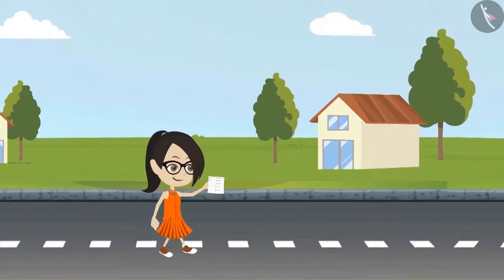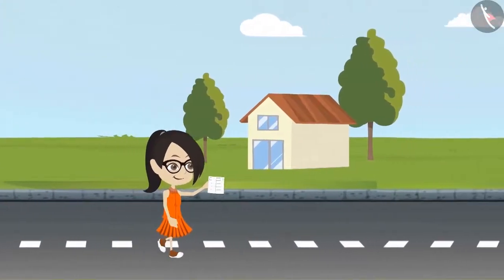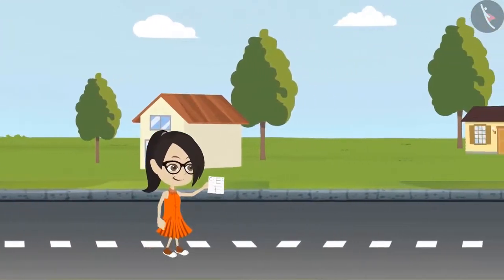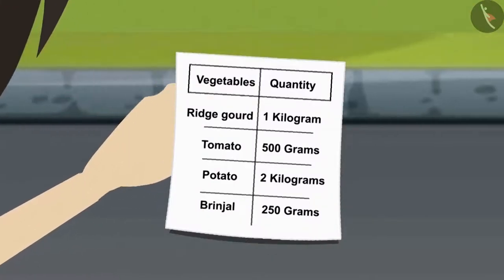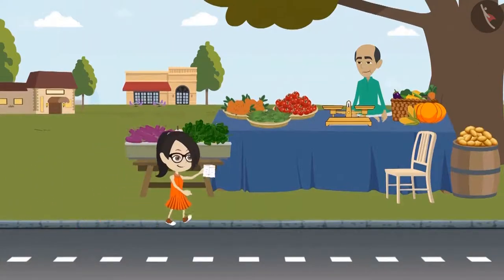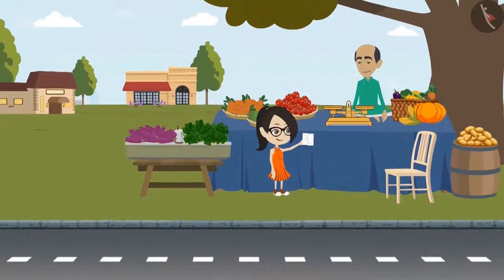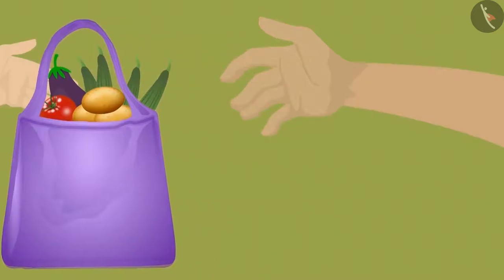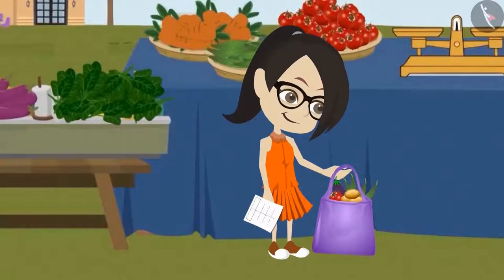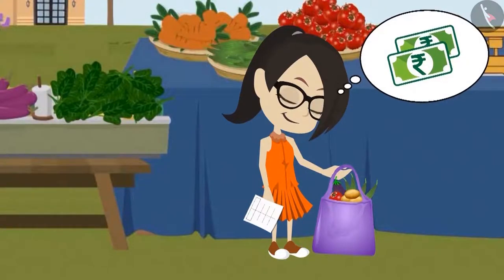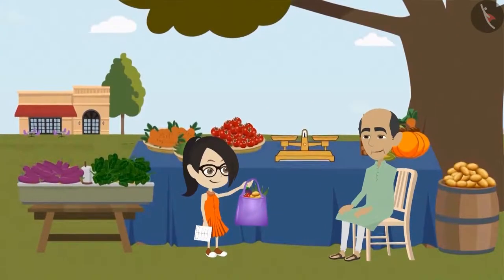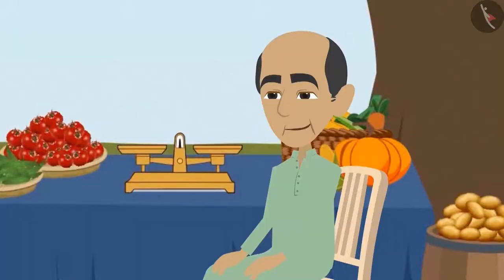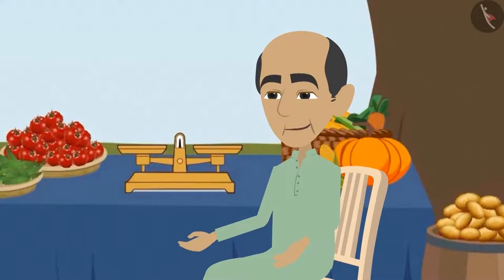Vandana is going to buy vegetables all by herself from the market today. She has created the list of all the vegetables she has to buy. She has reached the vegetable shop and has bought all the vegetables on the list. Now she has to pay the vegetable seller. She asked how much all these vegetables cost, and he immediately told her that all the vegetables were worth 67 rupees.